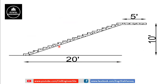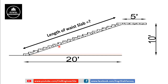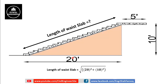To determine the quantity of concrete required, the length of the waist slab is needed. A right-angle triangle is formed, so by using the Pythagoras theorem we can determine the length of the waist slab. The hypotenuse of the triangle is the length of the waist slab, the perpendicular is 10 feet and the base is 20 feet. Hypotenuse squared equals base squared plus perpendicular squared, giving us the length of the waist slab as √(20² + 10²) = 22.36 feet.